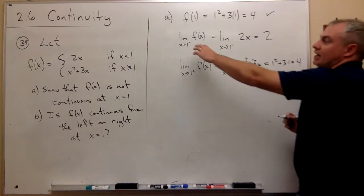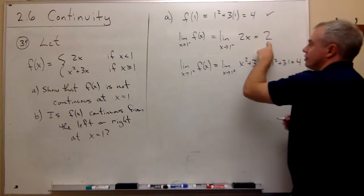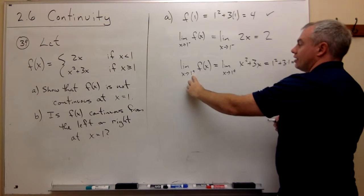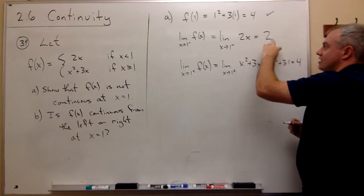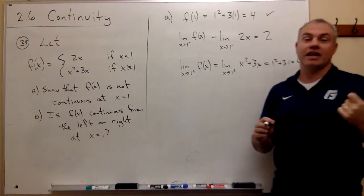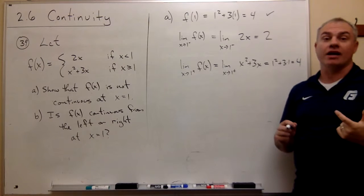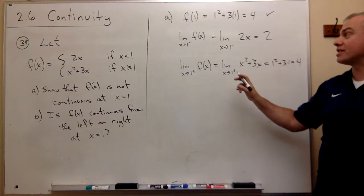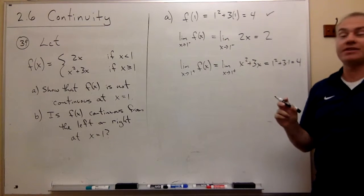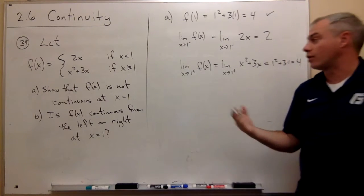So the limit as x goes to 1 from the left is 2. The limit as x goes to 1 from the right is 4. So does this thing have a limit only if the left hand and the right hand limits agree? They do not. So that shows us that this thing is not continuous at 1 because it doesn't have a limit at 1.